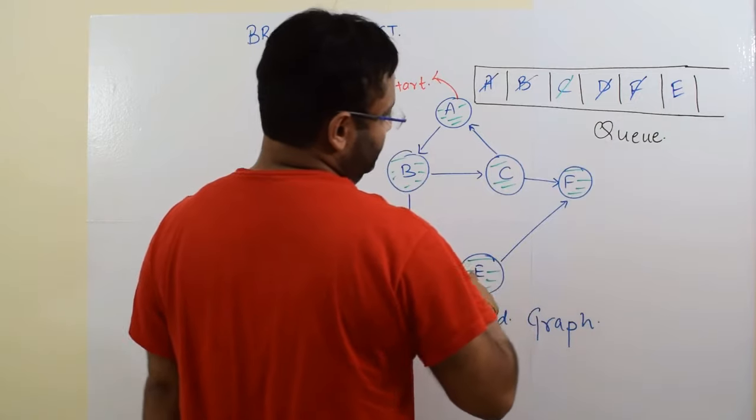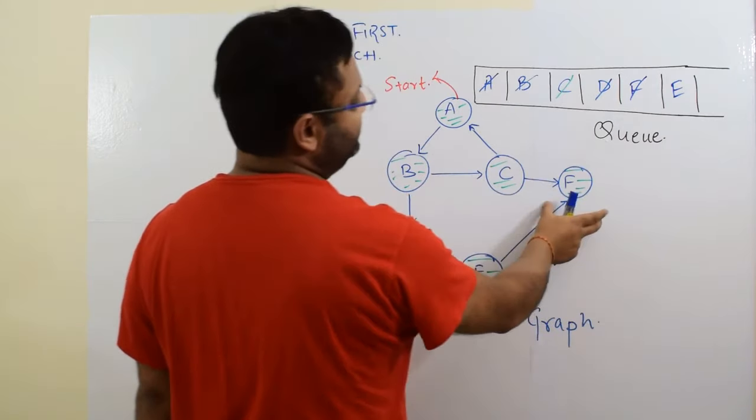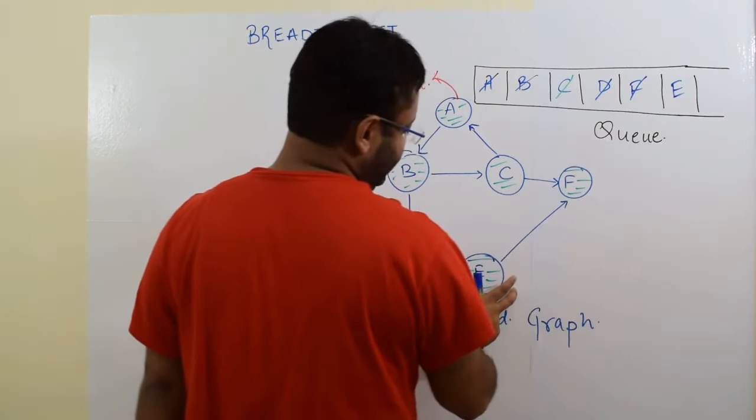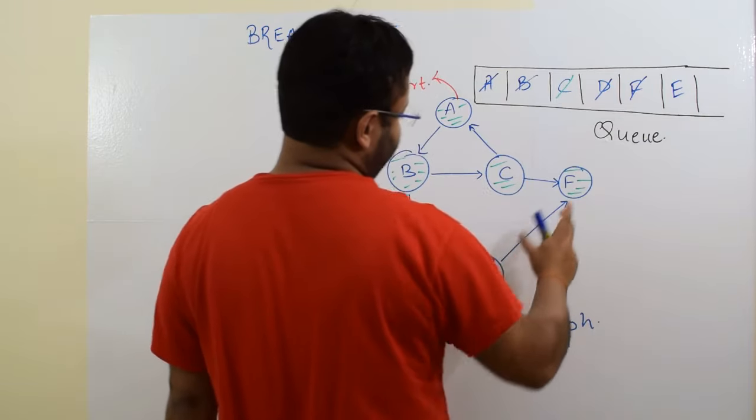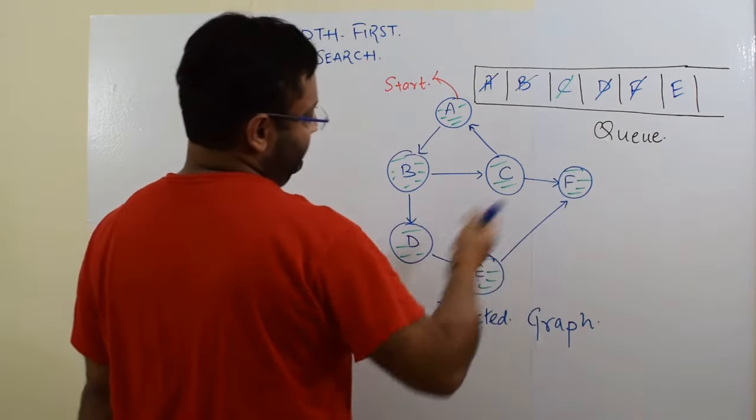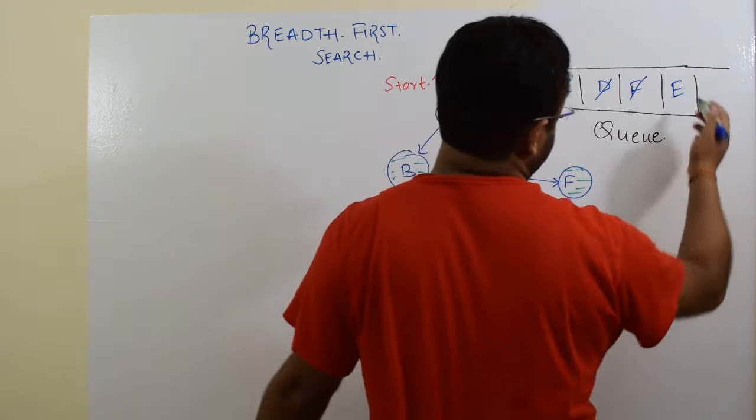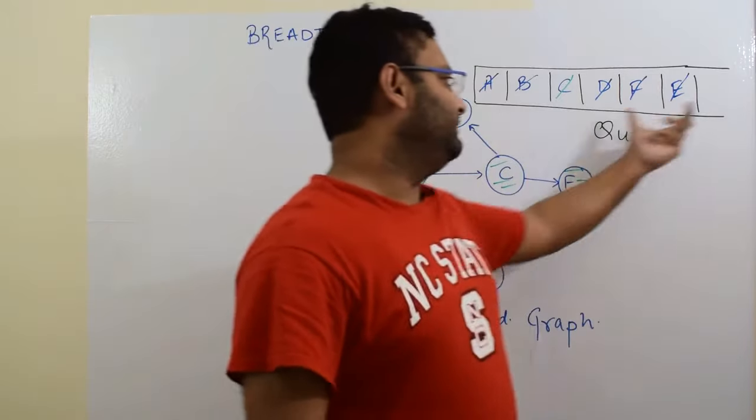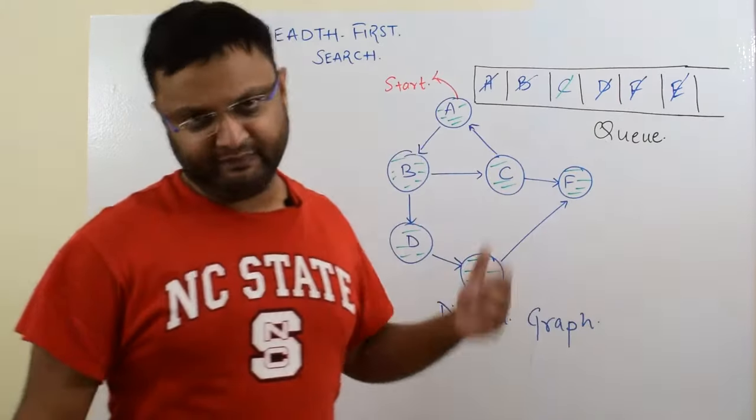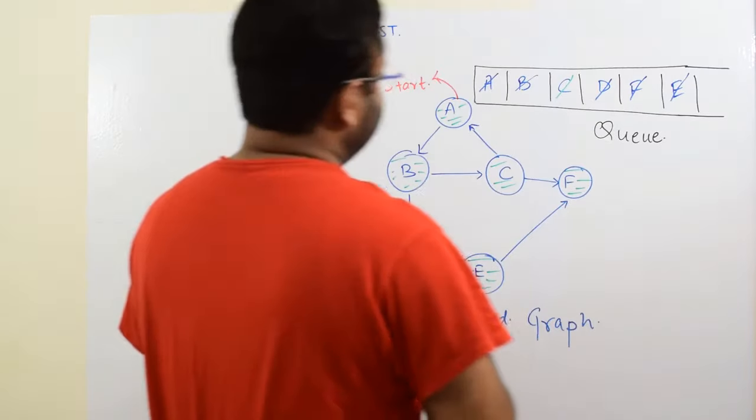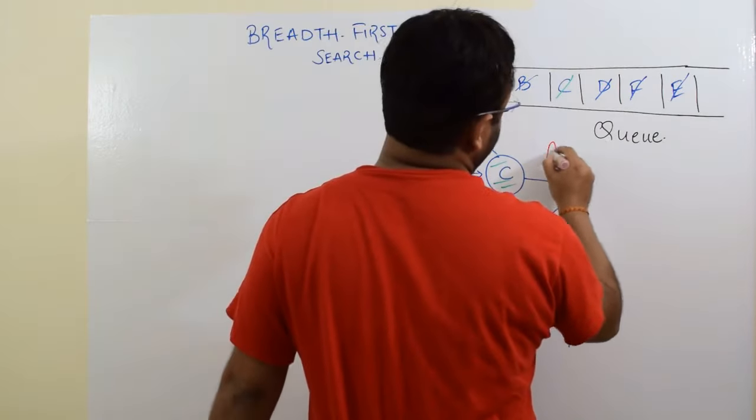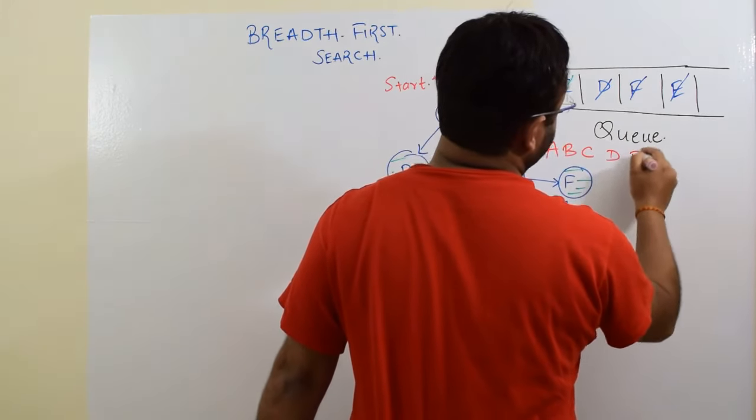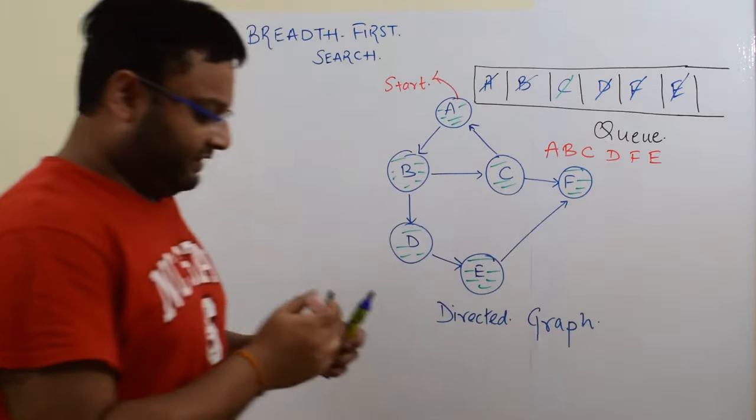You take F out. There are no neighbors of F. Jump to the next element E. From E, any neighbor which has not yet been visited? Only one neighbor F but it has already been visited. Nothing you can do. Nothing is remaining in the queue. So your algorithm has terminated. What is the BFS traversal here? It has been A, B, C, D, F, E.